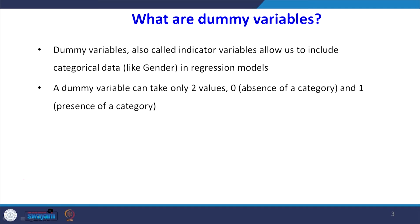A dummy variable can take only two values when it is a gender category. For example, 0 means absence of category and 1 means the presence of category. So here 0 will be taken as the reference.